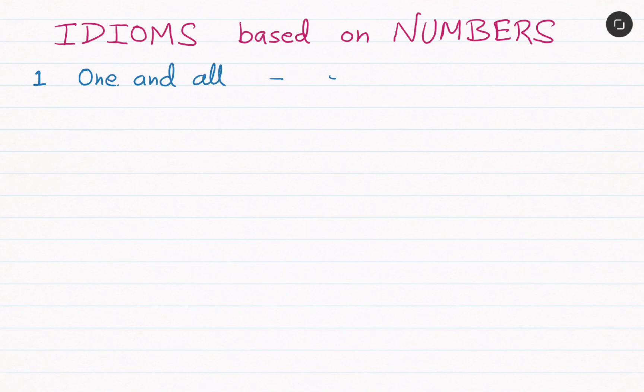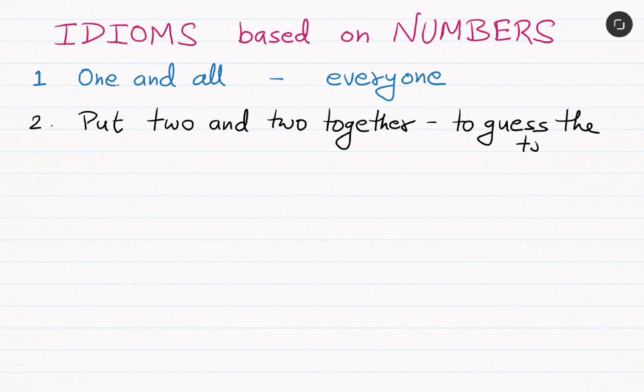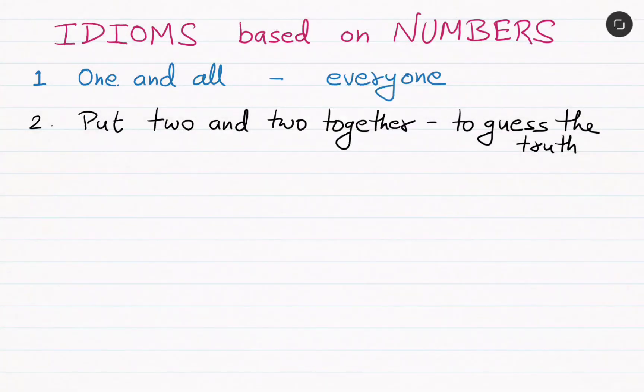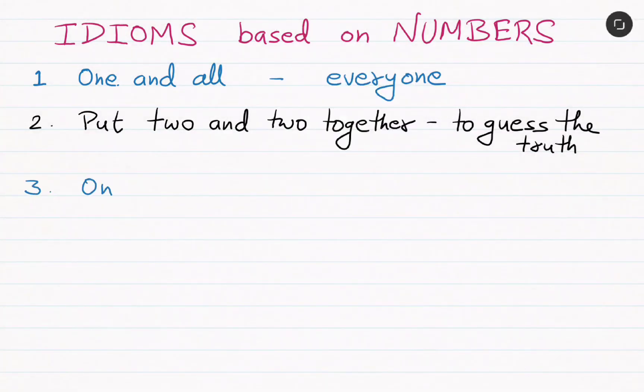The first one is 'one and all,' that means everyone. The second, 'put two and two together,' to guess the truth.